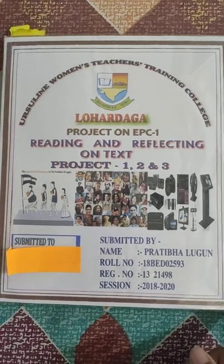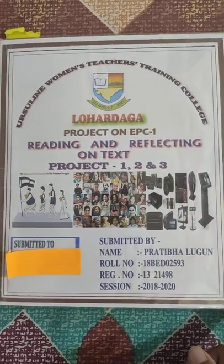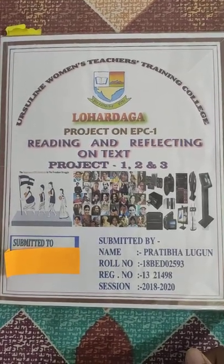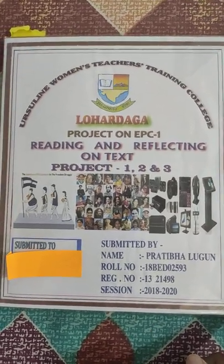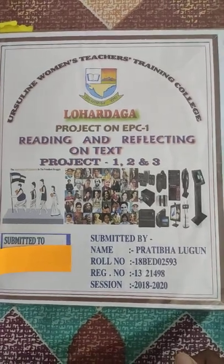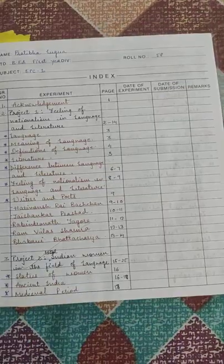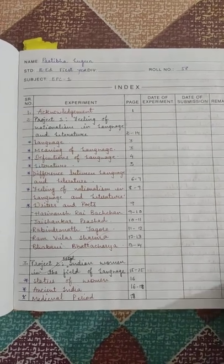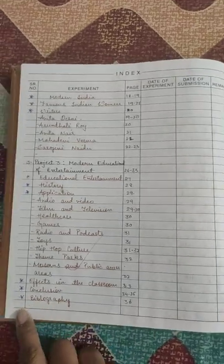We are looking at the third project on EPC1 — Reading and Reflecting on the Text. Projects 1, 2, and 3 with related images. On the side you have submitted to and submitted by: name, role number, registration number, then session. Opening the file, it's the front page, first page, then the index. The index is fulfilled and acknowledged.